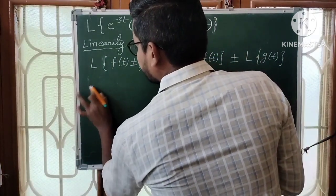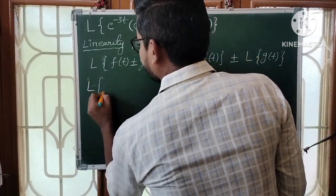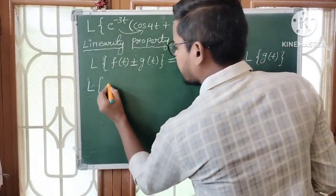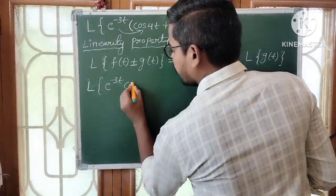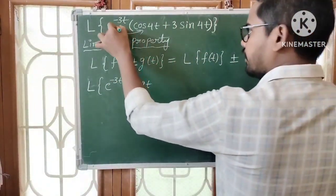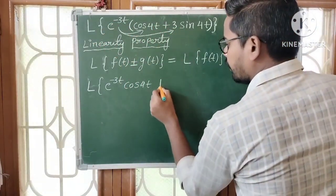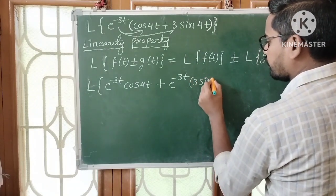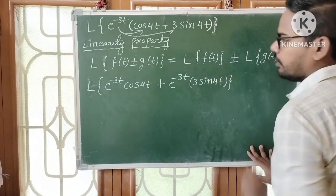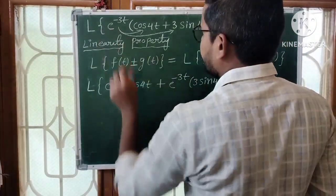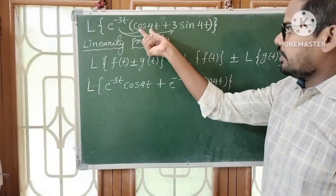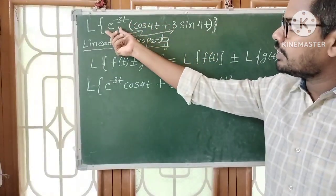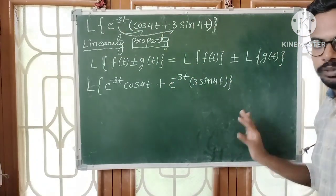First, distribute e^(-3t) into the expression. So we get e^(-3t)·cos4t plus e^(-3t)·3sin4t. Just multiply e^(-3t) with cos4t as well as 3sin4t. Distribution is completed.